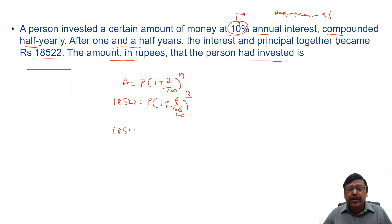18,522 equals to P into 1 plus 1 by 20 is 21 by 20 whole cube. So 18,522 equals to P into 21 cube is 9261 by 8000. 9261, 2s are 18,522.